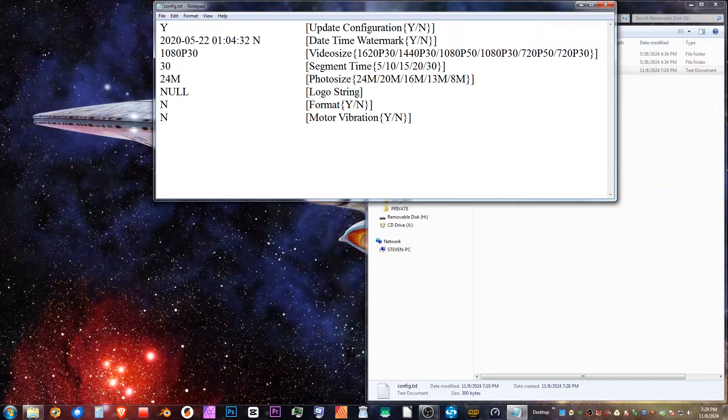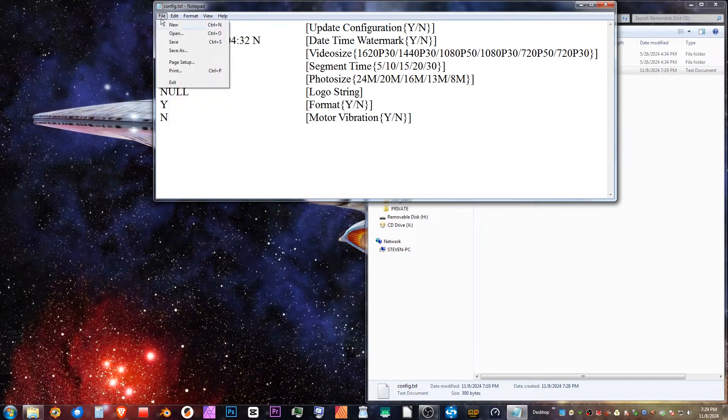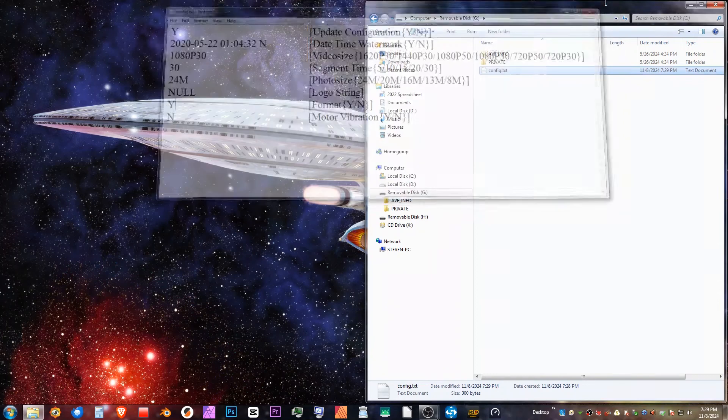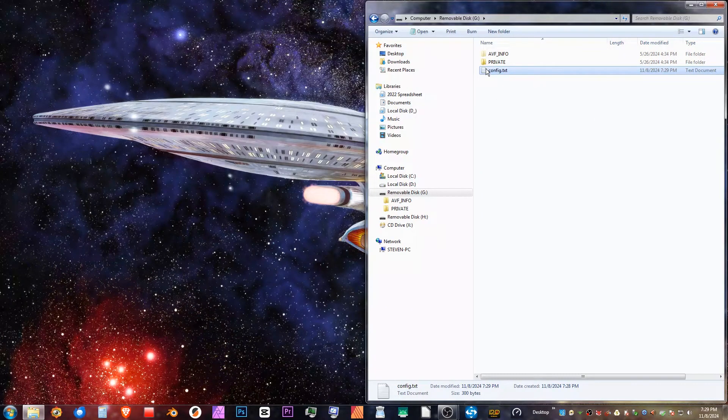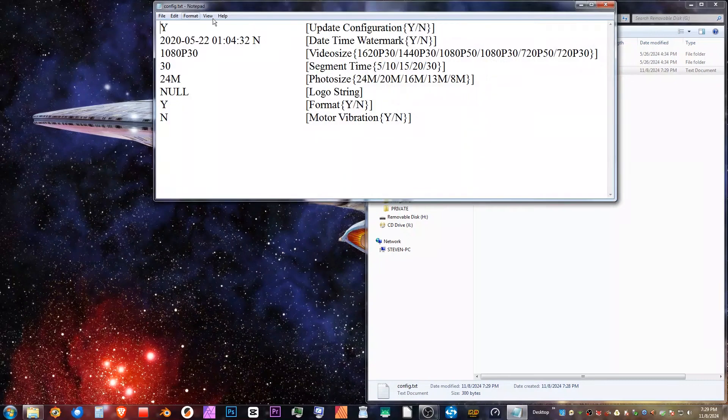I'm going to put 30 minute segments, 24M on the photo size, and I'm going to format it. Then we're going to save this. And just before, like I said in the other video, before you actually eject this and put it in the glasses, let's double-click this just to make sure everything was saved.